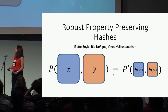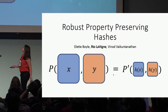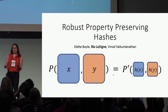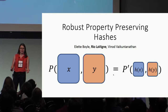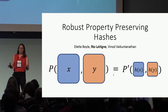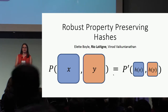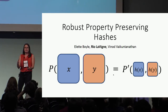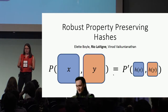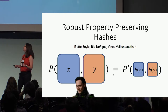I'm Rio, and I've been working with Alette Boyle and Vinod Van Kuntenathan on this notion of robust property-preserving hashes. A property-preserving hash basically means we have some property that we evaluate on some inputs, but we want to still be able to determine that property on compressed or hashed versions of those inputs. The robust part is we want to be able to do this in the presence of an adversary.